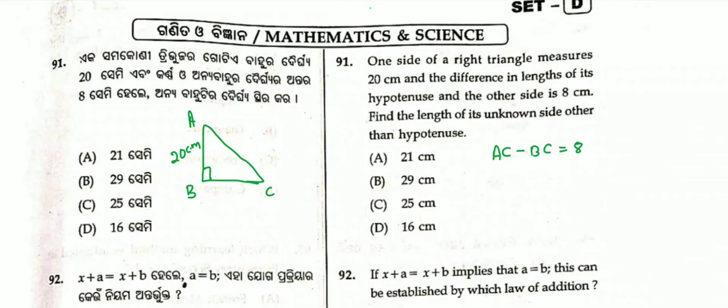Find the length of its one side other than hypotenuse. Hypotenuse means BC length. So, AC is equal to 8 plus BC. If you write the right-angle triangle, then we will write the theorem: AC square is equal to AB square plus BC square. We send AC to 8 plus BC.